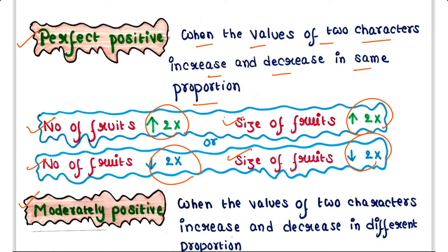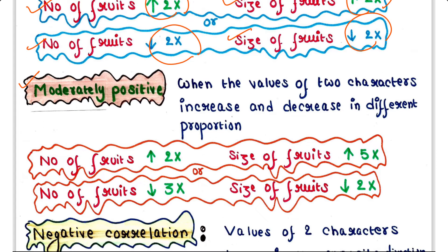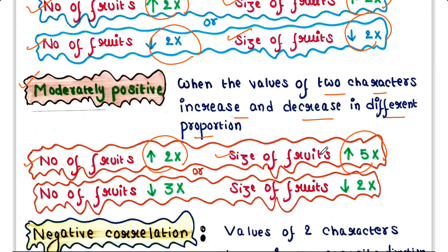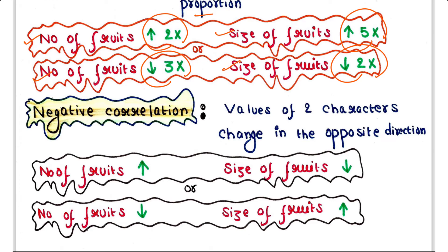Moderately positive correlation is when the values of two characters increase and decrease in different proportions. For example, number of fruits is increased five times, or else number of fruits is decreased three times and size of fruits is decreased two times.